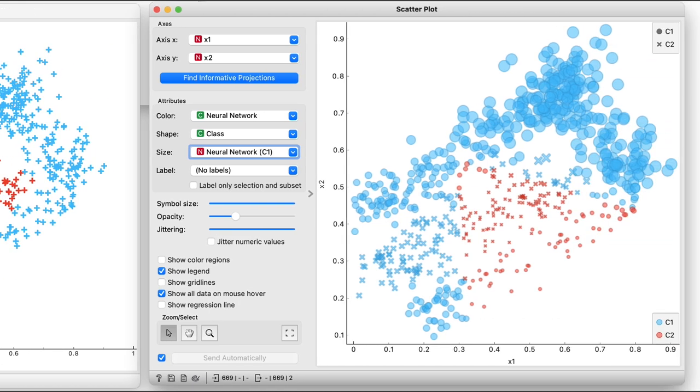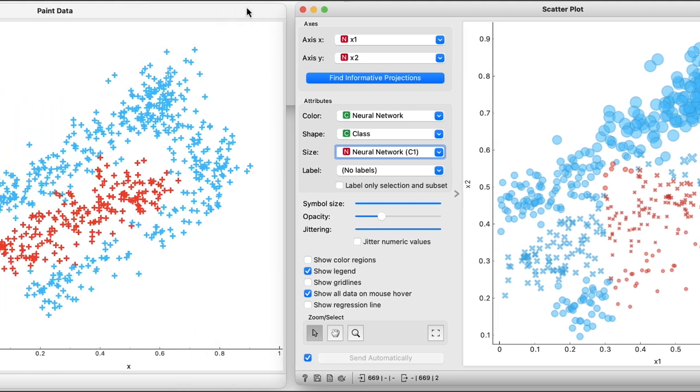The scatterplot shows that our network with two logistic regressions in the hidden layer cannot cope with our data set. Several circles belonging to C1 on the left are red, while they should be blue.